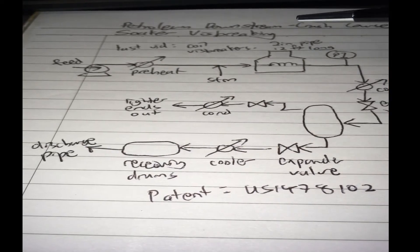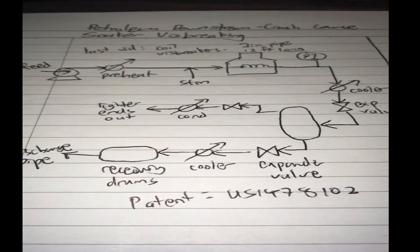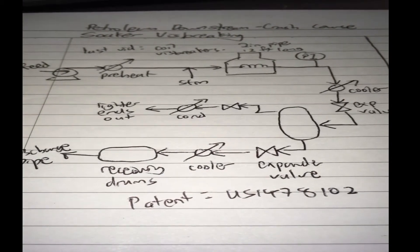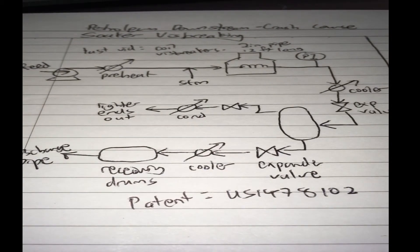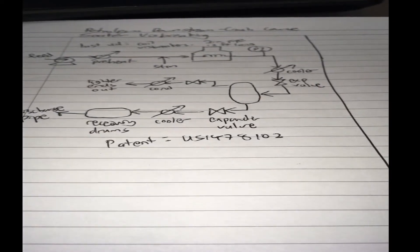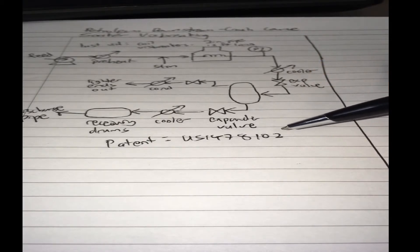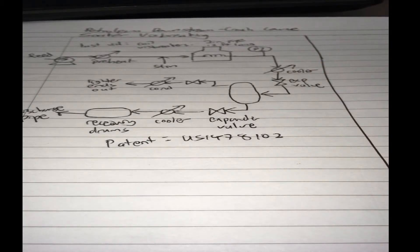This is the original visbreaker patent, one of the originals. They call it US patent number 1478102. They call it the art of treating oils. That's basically a coil visbreaker.